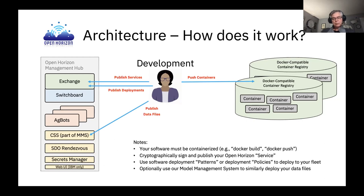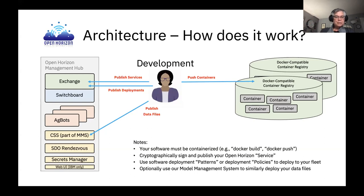When it comes time to put software into Open Horizon, the developer needs to cryptographically sign and publish it as a service in Open Horizon. Then you can choose to use either software deployment patterns or deployment policies to regulate which nodes in your large fleet of edge machines run it. You can also deploy data files using the CSS — the cloud sync service, part of the model management service. The management hub can be in any of the public clouds, but it can also be on-premise and disconnected from the internet, which is important for factory environments where internet connections are often not allowed.